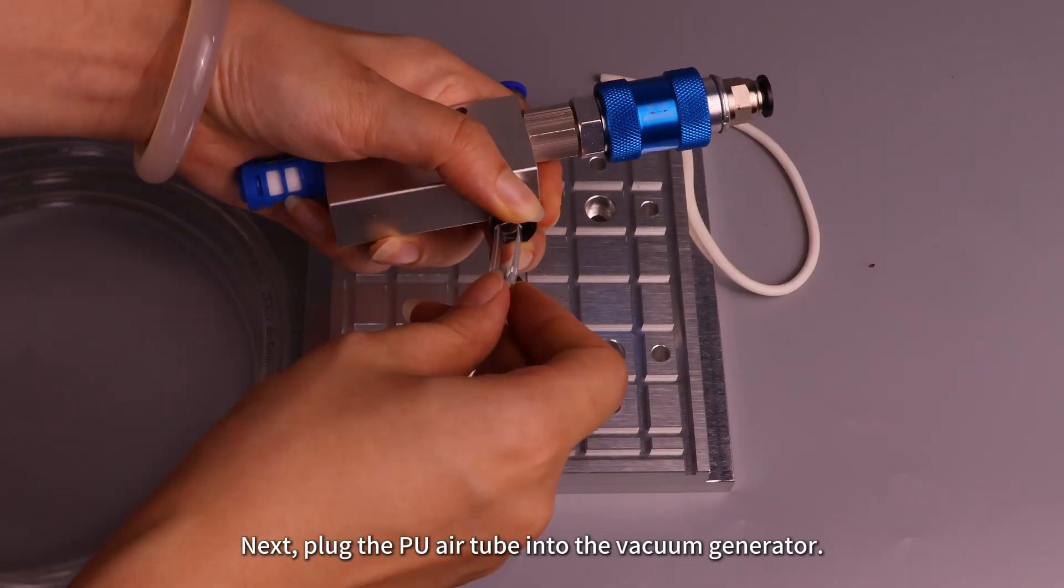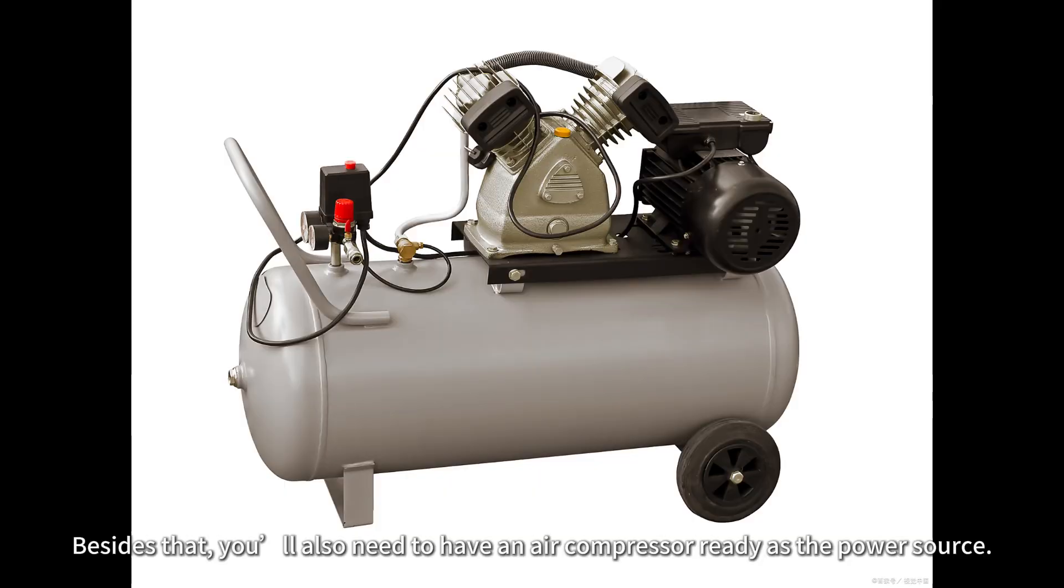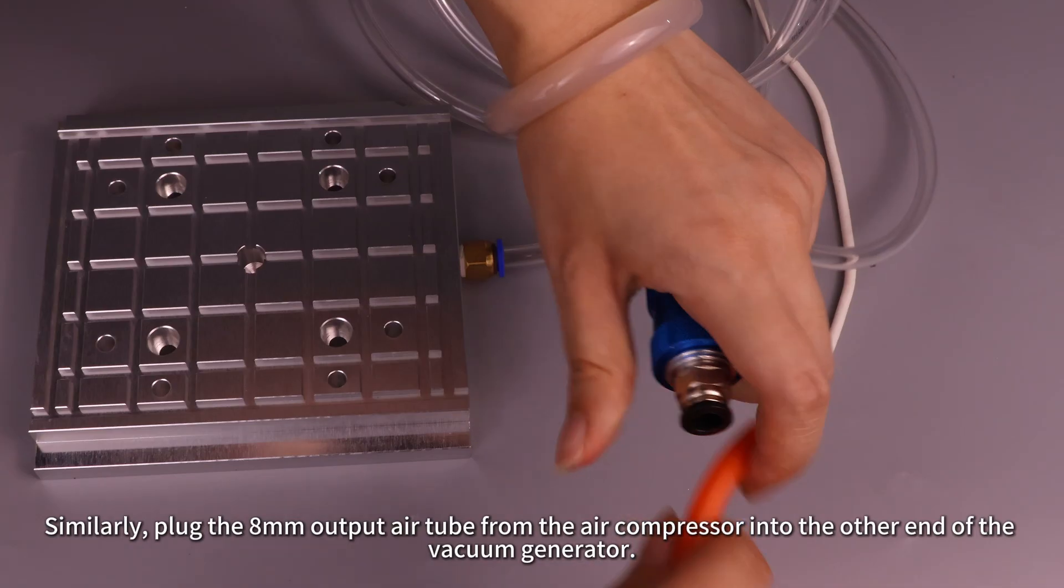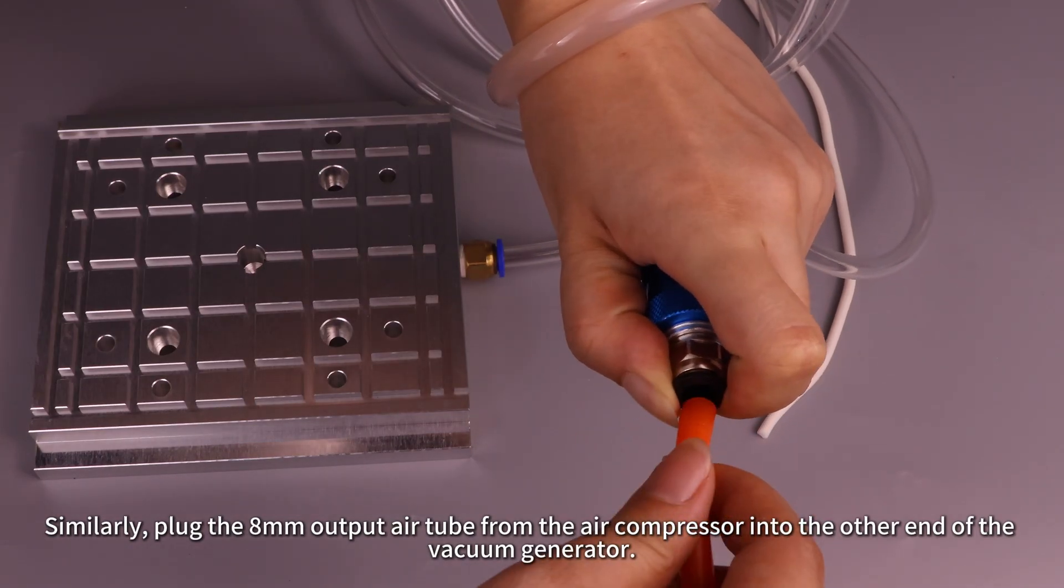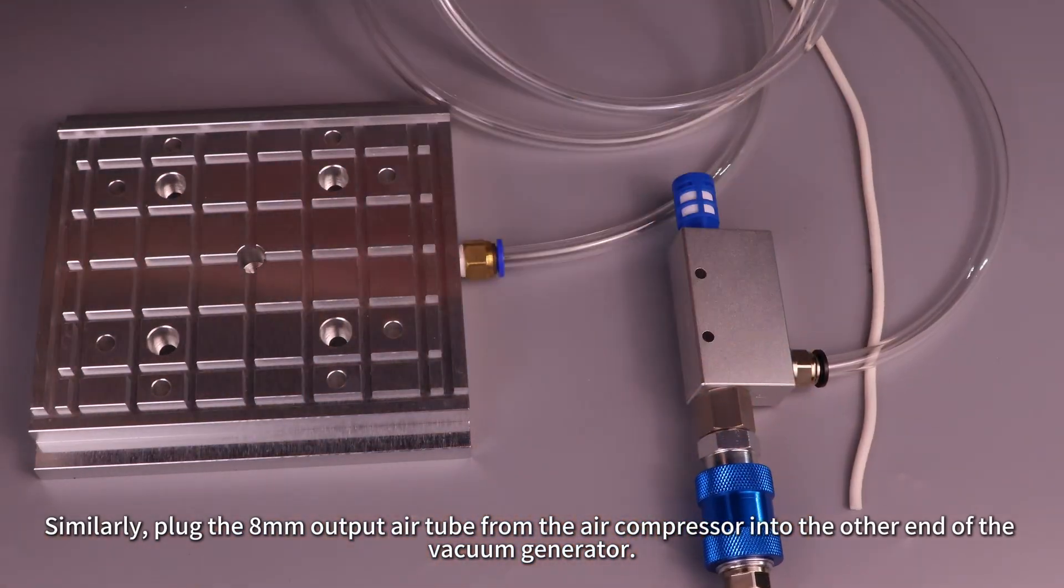Next, plug the PU air tube into the vacuum generator. Besides that, you'll also need to have an air compressor ready as the power source. Similarly, plug the 8mm output air tube from the air compressor into the other end of the vacuum generator.